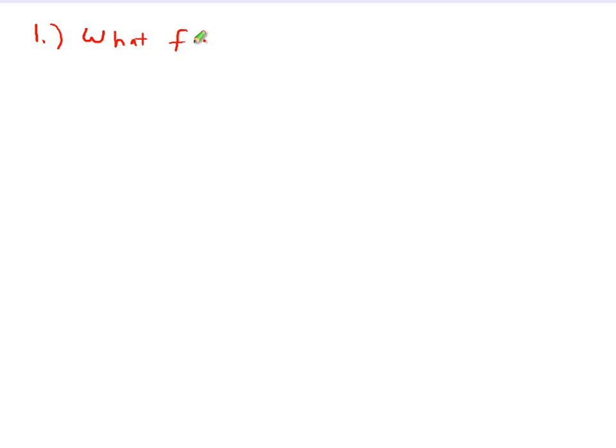Drawing text to the screen is a three-step process. Each step can have its own complexities, but if you take a look at example code in the book, it's usually not too bad to get text onto the screen. The first step is to figure out what font and how big you want the font to be when you draw it on the screen. That's pretty straightforward — if you just tell a computer to draw something, it has no idea what style or size of font you want without that step.